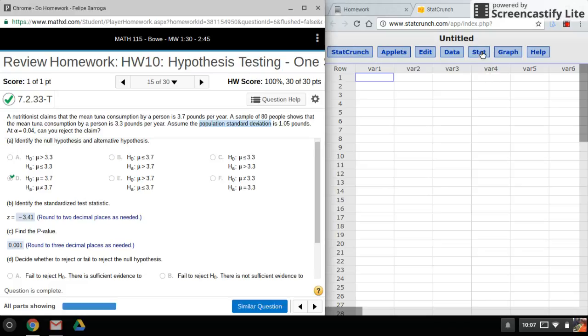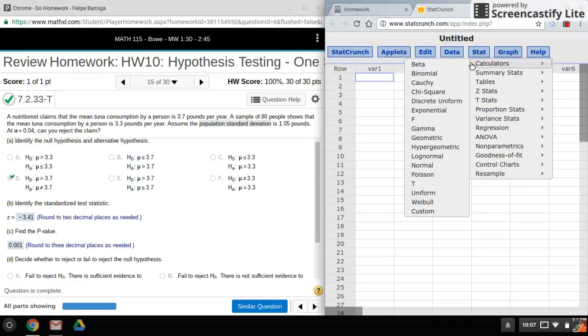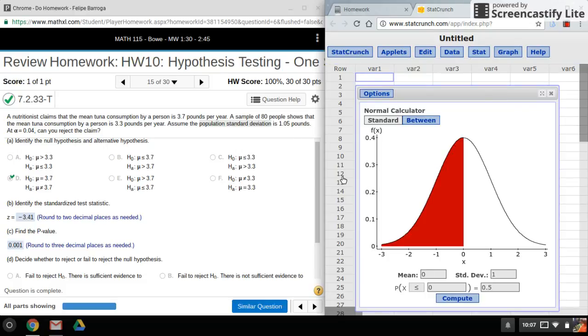Okay, so here we have a population standard deviation. That's how we know it's a z-test. So we'll need a normal calculator. So that's Stat, Calculators, Normal.